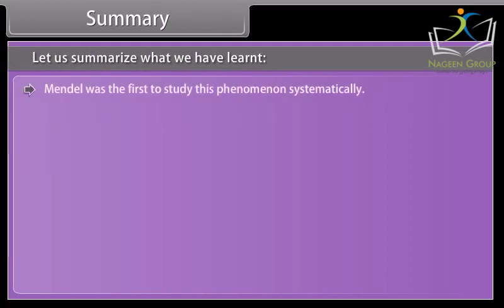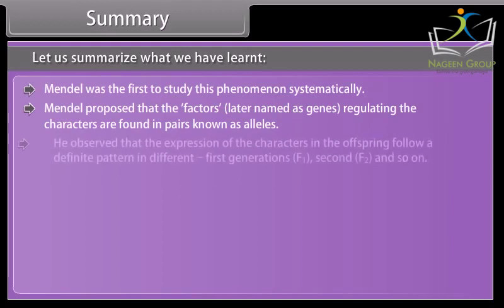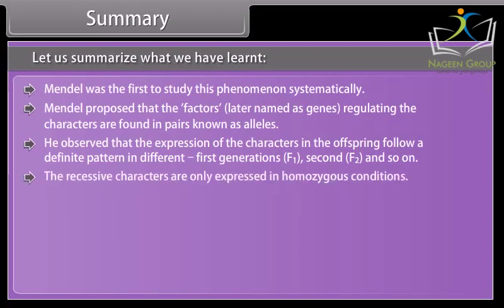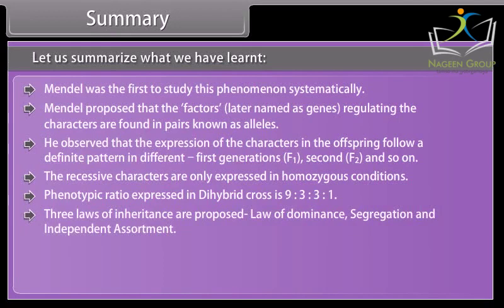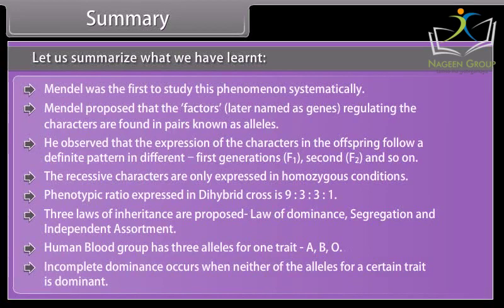Summary. Mendel was the first to study inheritance systematically. He proposed that factors — later named genes — regulating characters are found in pairs known as alleles. The expression of characters in offspring follows a definite pattern across F1, F2, and subsequent generations. Recessive characters are expressed only in homozygous conditions. The phenotypic ratio in a dihybrid cross is 9:3:3:1. The three laws of inheritance are: Law of Dominance, Segregation, and Independent Assortment. Human blood groups have three alleles: A, B, and O. Incomplete dominance occurs when neither allele for a trait is dominant.